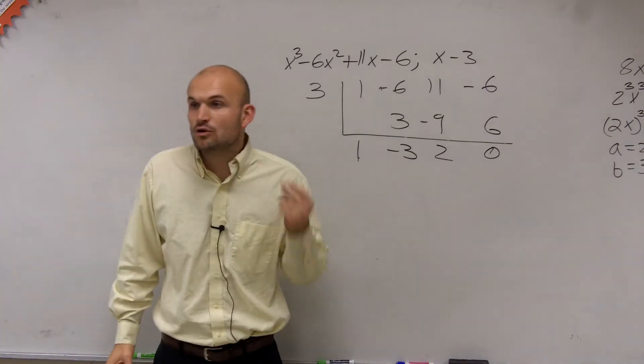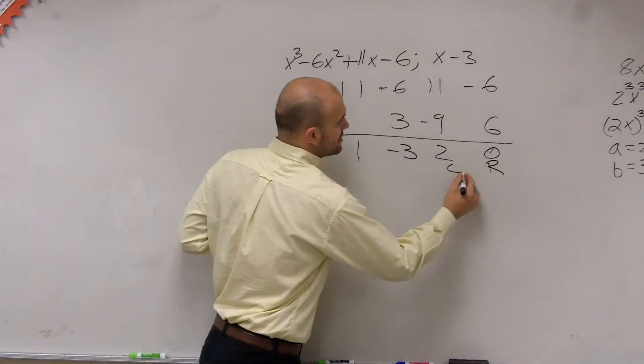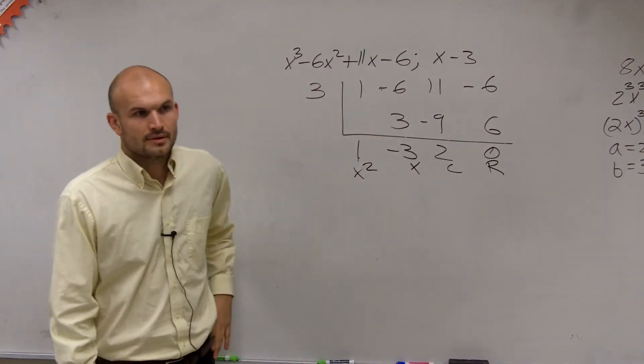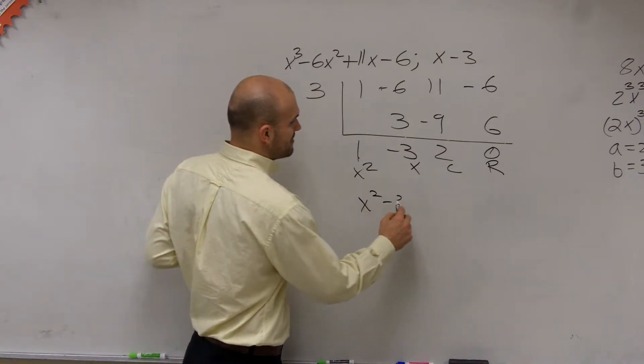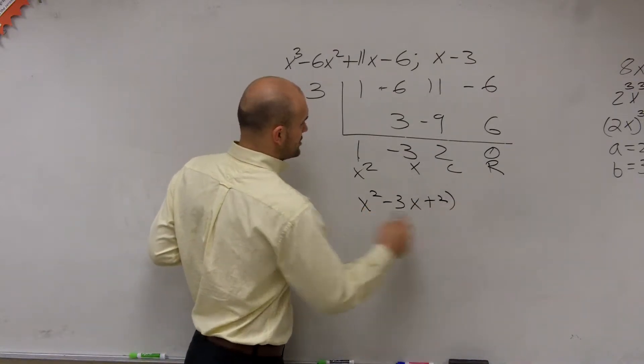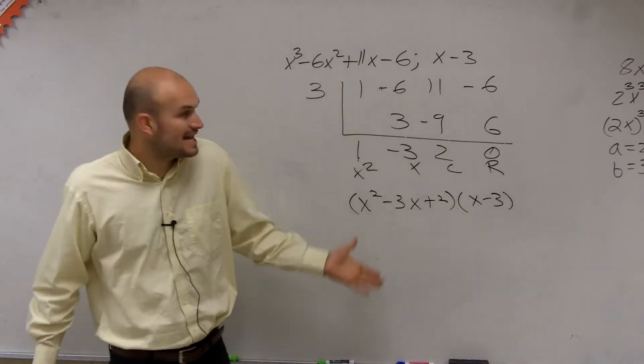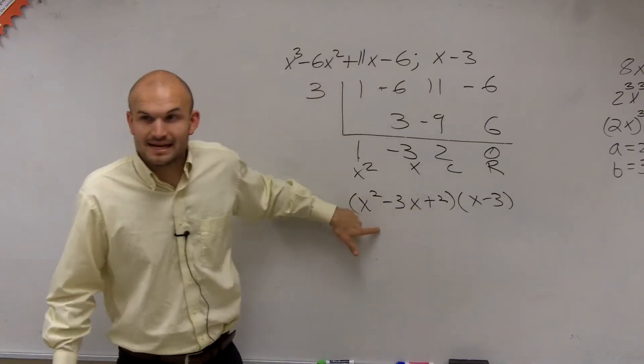I did that very quickly because that's how quickly we need to get with synthetic division now. You guys can see I have a remainder, constant, linear, and quadratic. So we could say the factored form then is x squared minus 3x plus 2 times x minus 3. That's what this says - this divides into this this many times.